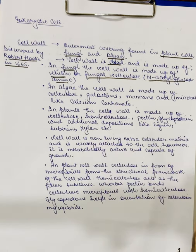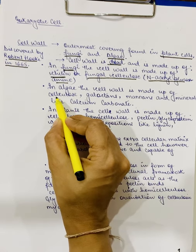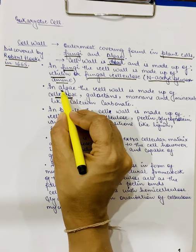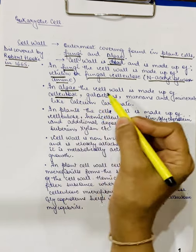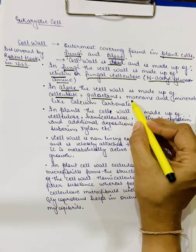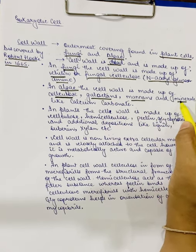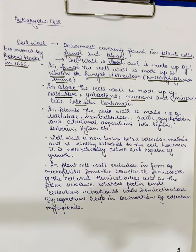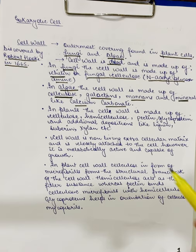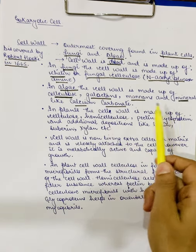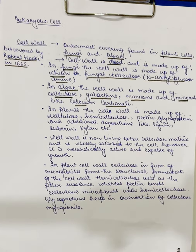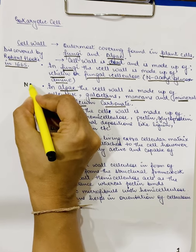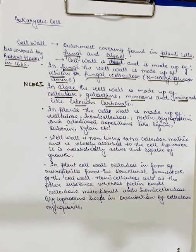In case of alga, the cell wall is made up of cellulose — because alga is a plant cell, you will find a cellulosic cell wall here. It is made up of cellulose, along with galactins, mannins, and minerals like calcium carbonate. So, in case of alga the cell wall is made up of cellulose, galactins, mannins and minerals like calcium carbonate. This is given in your NCERT and you are supposed to remember it.